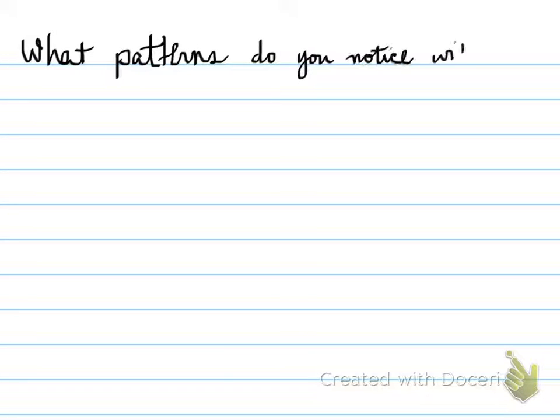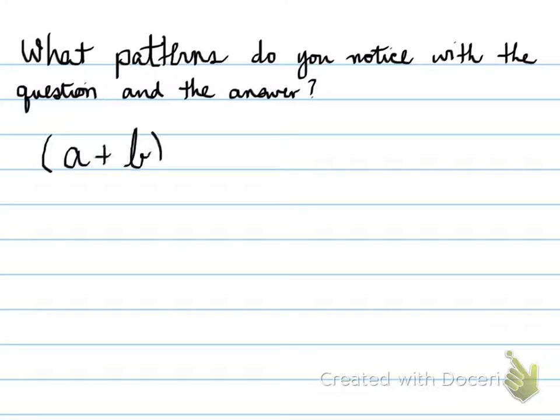We're going to look at what patterns you notice with the question and the answer. (a+b)² is actually equal to a² + 2ab + b². Square the first, which is a², square the last, which is b², and the middle term is multiply everything you see. You see an a, a b, and a 2, so you multiply everything to get 2ab.